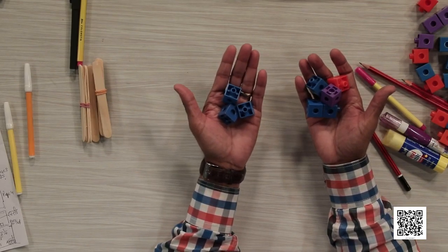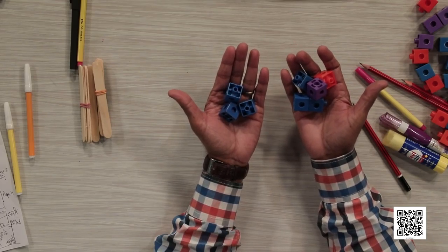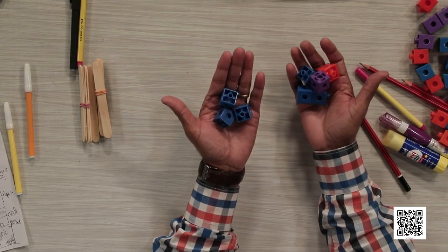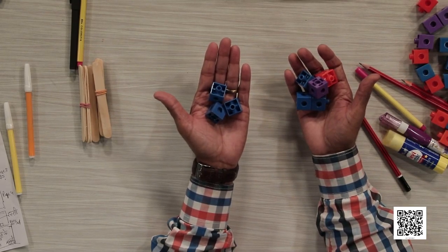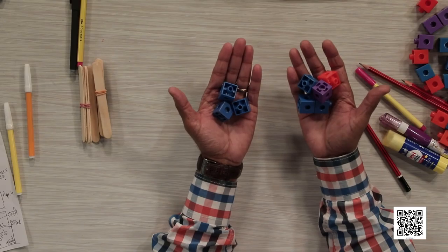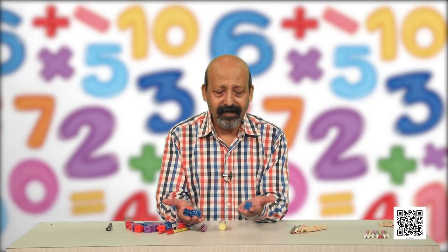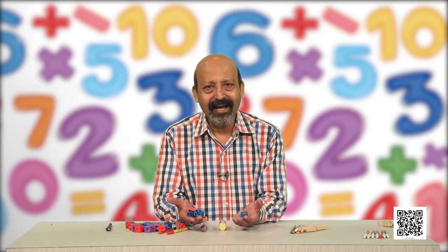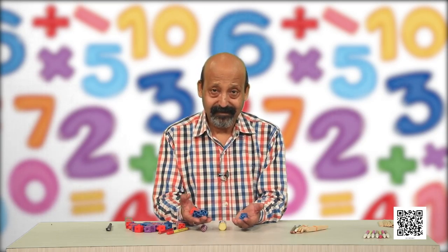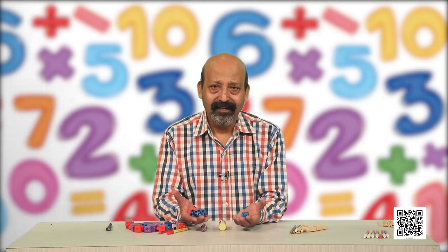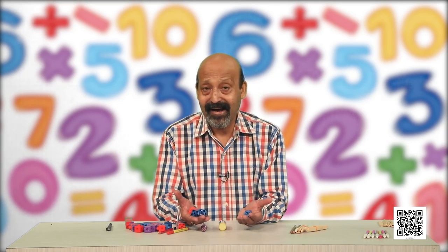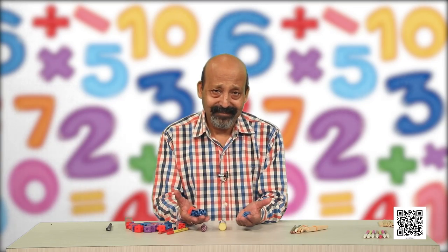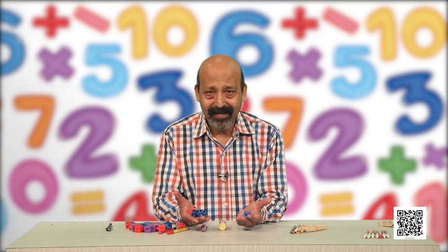How can we say heavy and light? I have these few objects in my hand. Out of these, in which hand do I have lighter objects and in which do I have heavier? This is heavier and this is lighter. Is a cat heavier than a mouse, or is the mouse heavier than a cat? Cat is heavier and mouse is lighter.